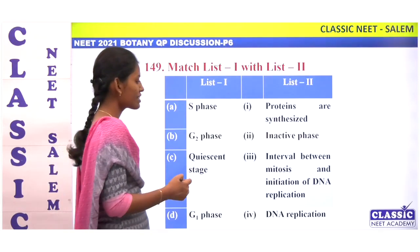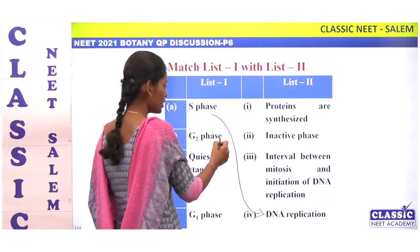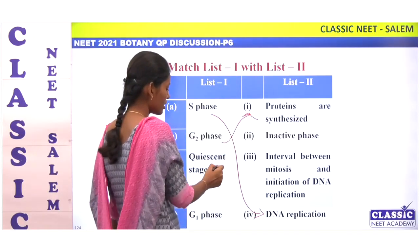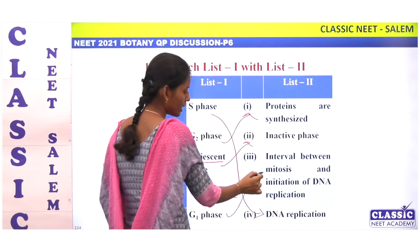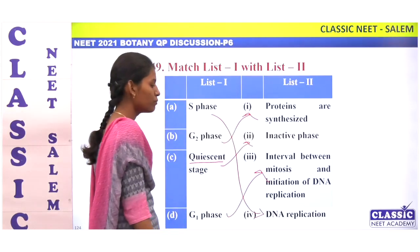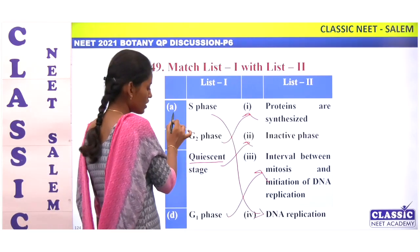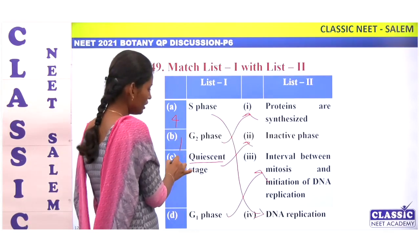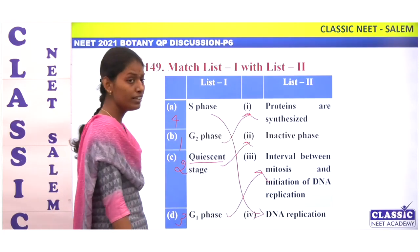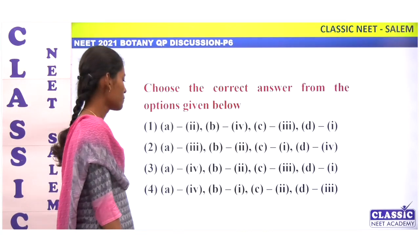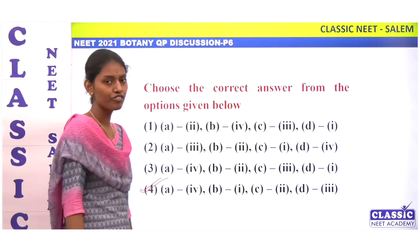Next match: S phase — DNA replication — A is 4. G2 phase — proteins are synthesized — B is 1. G0 — quiescent/inactive stage — C is 2. G1 phase — interval between M phase and initiation of DNA replication — D is 3. Match is 4, 1, 2, 3. Option 4.